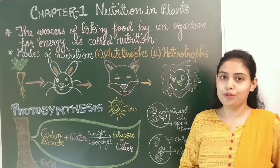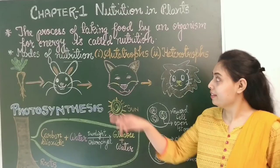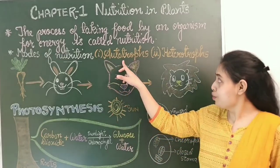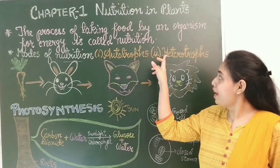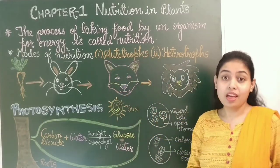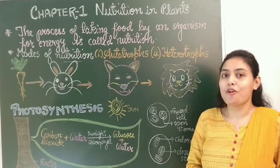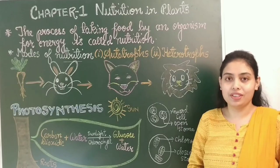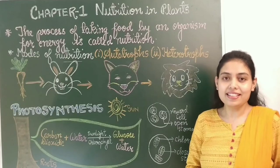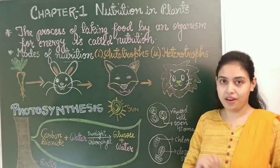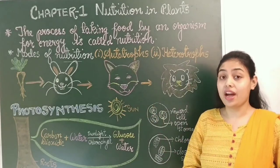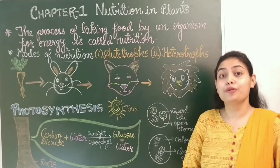There are two modes of nutrition: autotrophs and heterotrophs. To understand modes of nutrition, let us see this diagram. It's a diagram of a food chain.